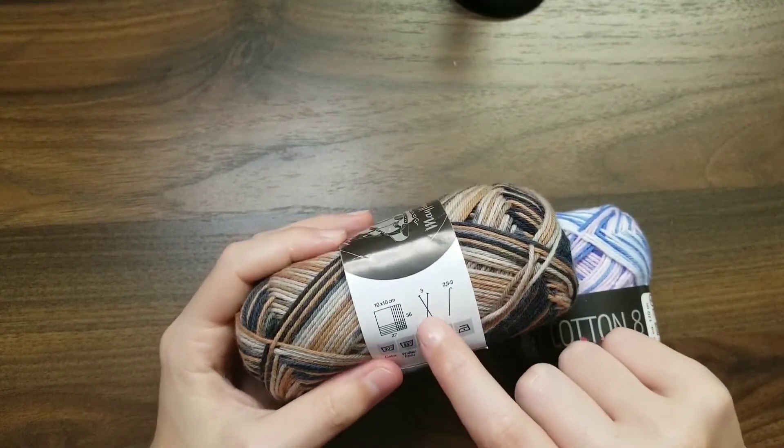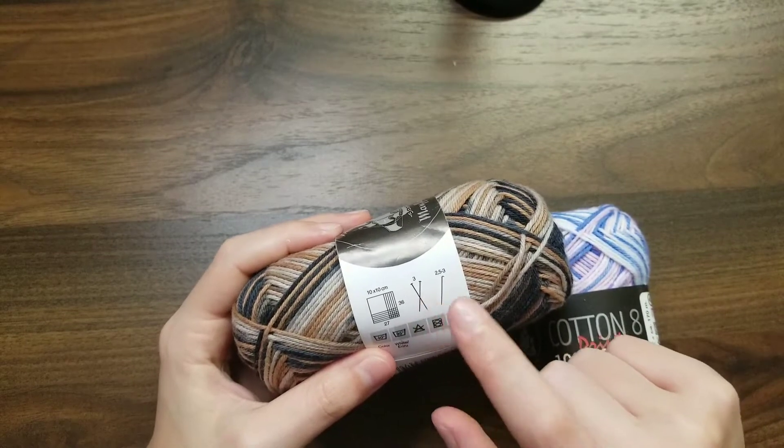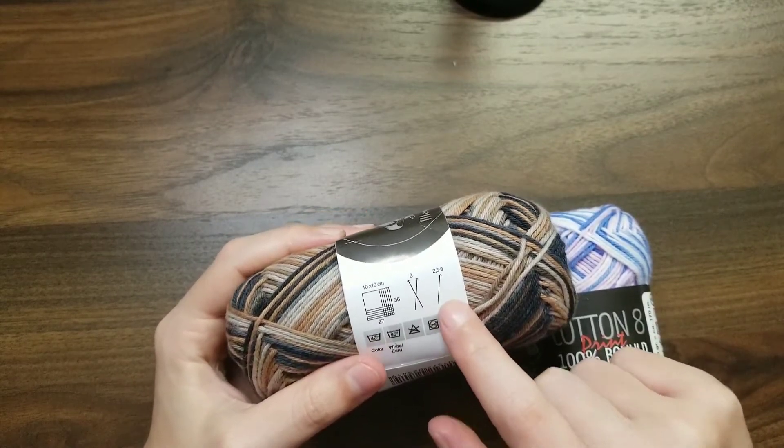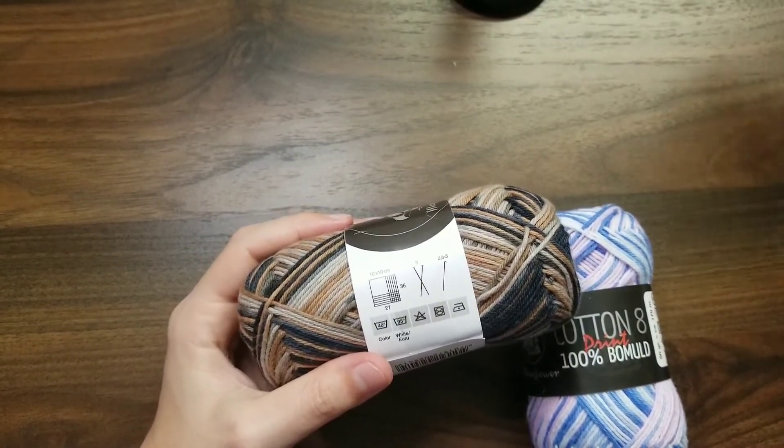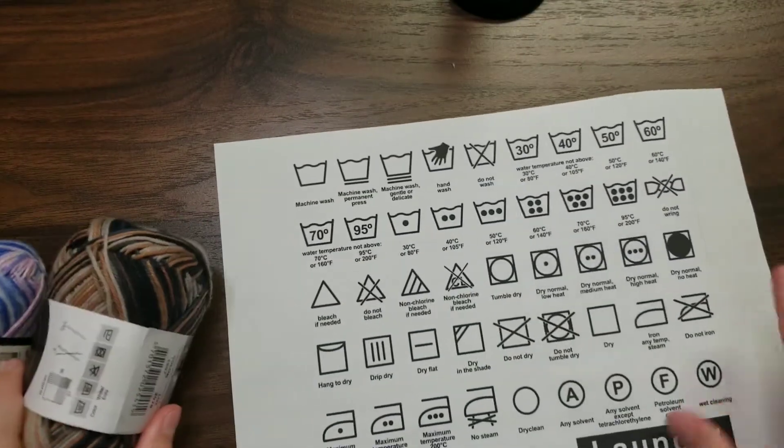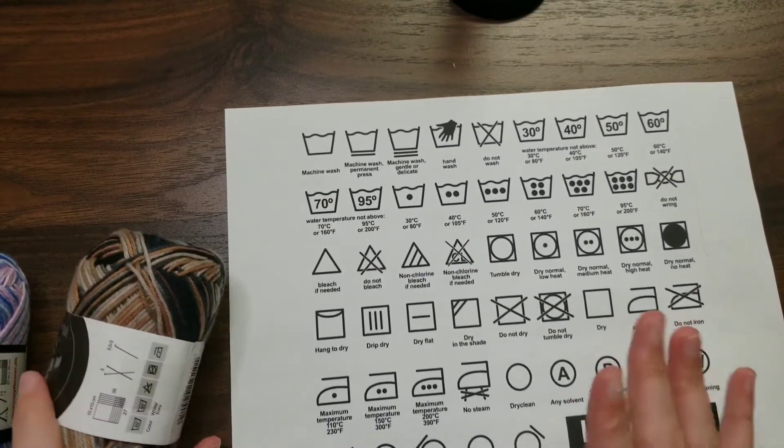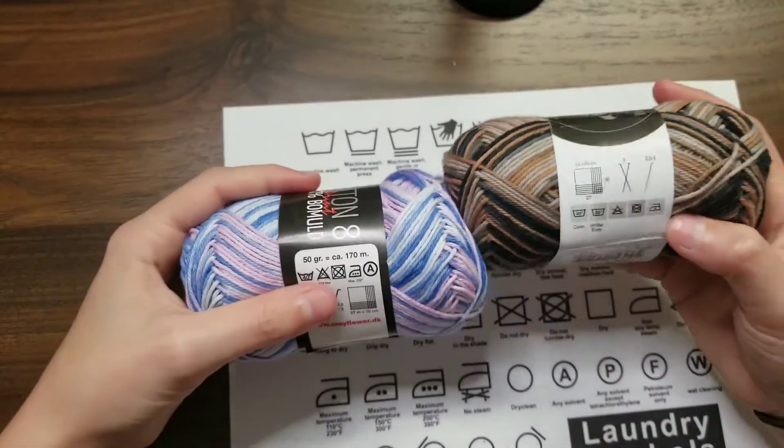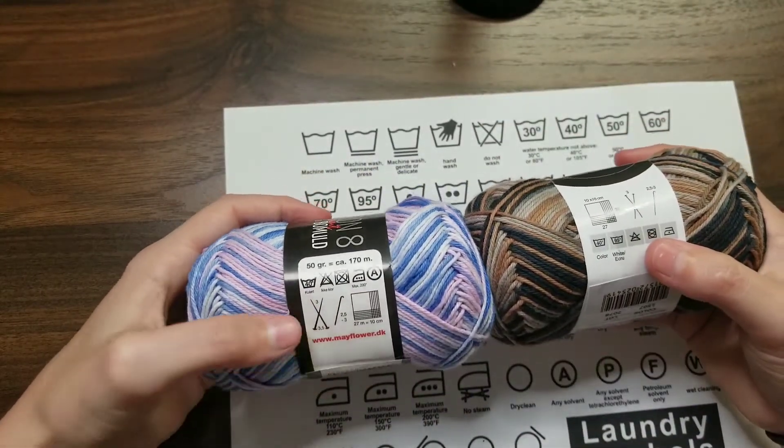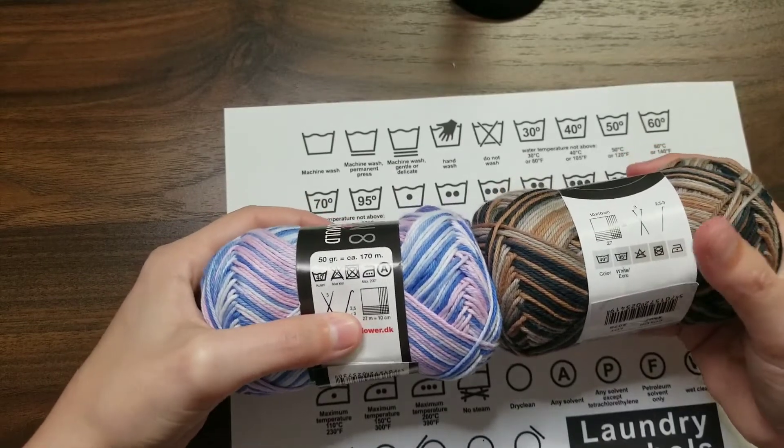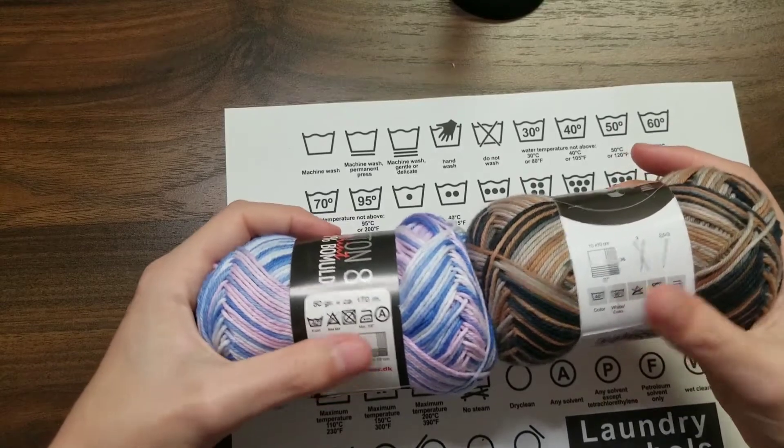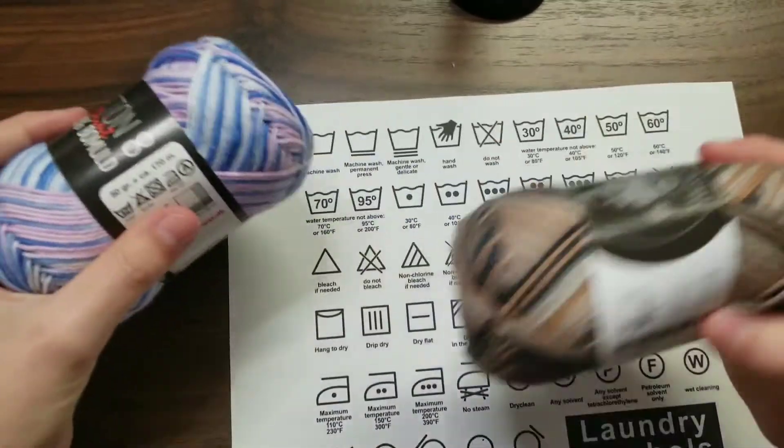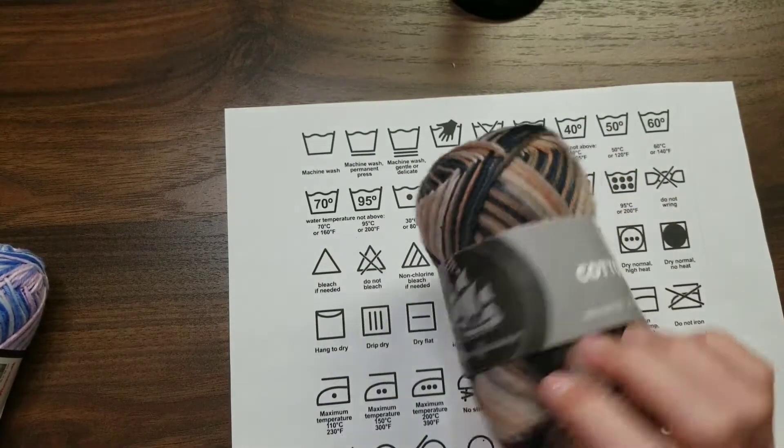Now, it does recommend a size 3 knitting needle or 2 1⁄2 to 3 for a crochet hook. And I actually have my little chart that I printed out beforehand for this. So, because these are a bit different, as you can see on the side here, based on instructions, although the knitting needle and the crochet needle size is the same as this one, based on washing instructions, they have different washing instructions. So, I'm going to do this one by one, and we'll start with this one.